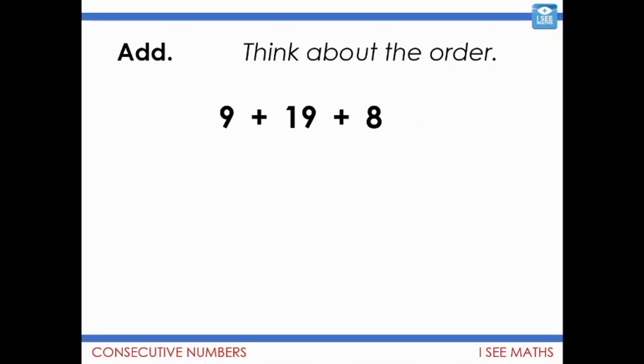Have a look at this example then. 9 plus 19 plus 8. Actually, I'm not going to use any of those numbers. I'm going to play around with them. Instead, I would rather do 10 plus 20 plus 10. Well, 9 is 1 less than 10. 19 is 1 less than 20. And 8 is 2 less than 10. So in total, it's going to be 4 less than that 40. 36.